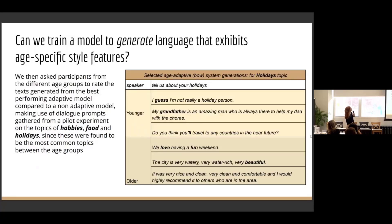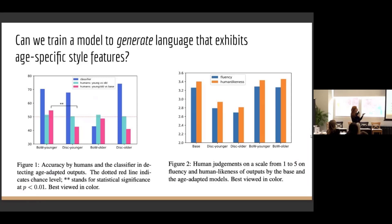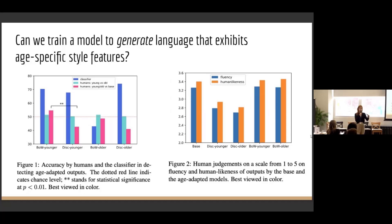I've pulled up some examples of the types of language that the more adaptive model generated. We were looking at three different topics that were quite equally represented in the data for the three groups. I picked out in bold some of the words that the adaptive model seems to learn to put in for the different groups. We also asked some humans to rate our generations, and humans found it quite tricky to differentiate between the two different age categories. In the subsequent experiment looking at whether this affects perception, perhaps at the topic and dialogue level we didn't have enough data to make strong findings. We do find that the slightly more simple models produce slightly more fluent results, and that strongly steering a model to produce specific output can hurt the generation.